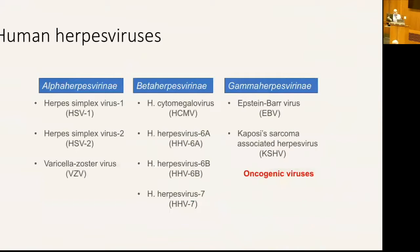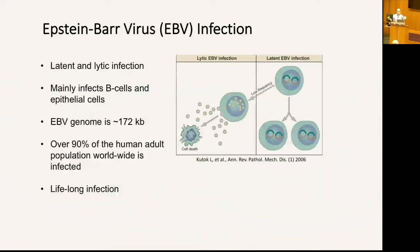There are three subfamilies of herpes viruses: alpha, beta, and gamma. Oncogenic herpes viruses fall into the gamma herpes virus subfamily — you have Kaposi sarcoma herpes virus (KSHV) and EBV. Like all herpes viruses, they have a latent state where very few genes are expressed, which is the predominant phase of the viral life cycle. There's also the lytic phase, where the virus switches from latent to lytic, most viral genes are expressed, virus particles are assembled, and released to infect new cells and tissue.